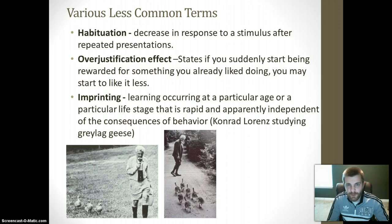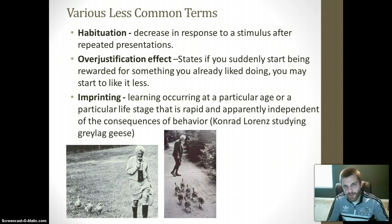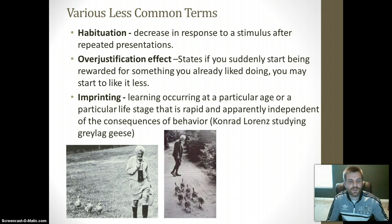Another term dealing with learning is imprinting. Imprinting is when you learn a specific response at a specific age or stage of life that is rapid and apparently independent of the consequences of behavior. The main example for AP Psychology is psychologist Konrad Lorenz studying greylag geese. As soon as these geese are hatched from their eggs, they imprint on the first things they see. In Lorenz's case, the geese imprinted on the movement of his boots and began to follow him around.